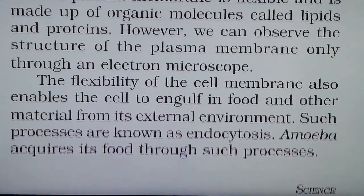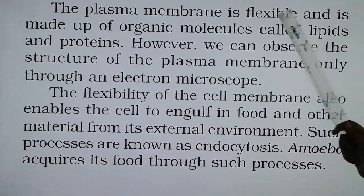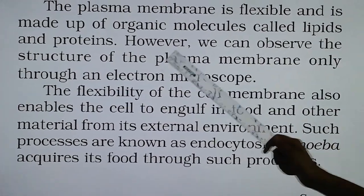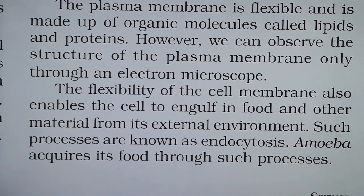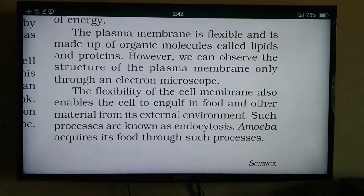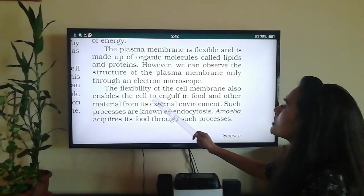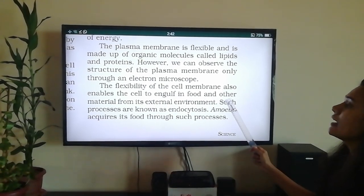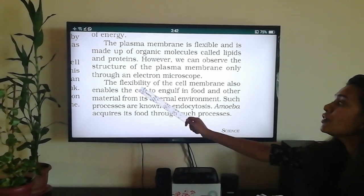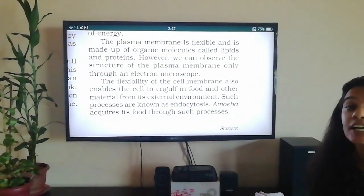In addition, the cell also obtains nutrition from its environment. Different molecules move in and out of the cell through a type of transport requiring the use of energy. We can prove that the plasma membrane is flexible and is made up of organic molecules called lipids and proteins — this is a very important point. The structure of the plasma membrane can only be observed through an electron microscope. The flexibility of the cell membrane enables the cell to engulf food and other materials from its external environment. Such a process is known as endocytosis.